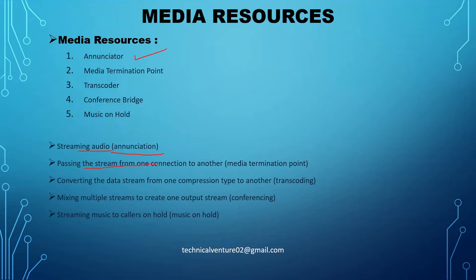Passing the stream from one connection to another — that is the MTP, the media termination point. The work of MTP is that it can pass the stream from one connection to another. Then we have the transcoder — transcoding converts the data stream from one compression type to another, like converting between different codecs.